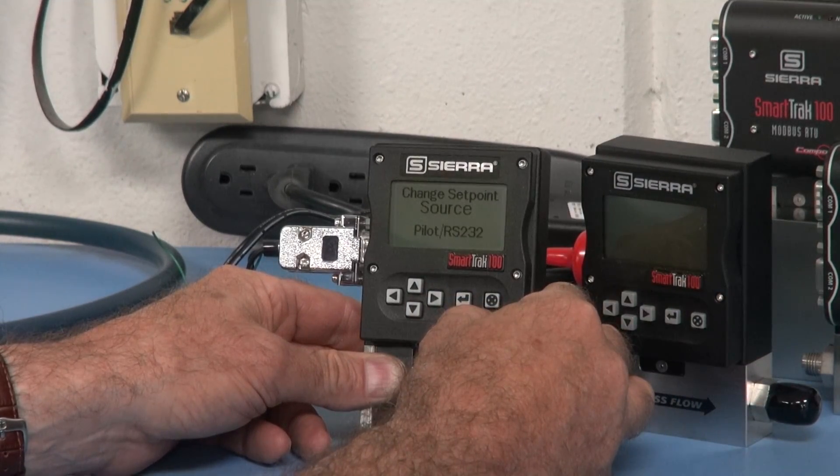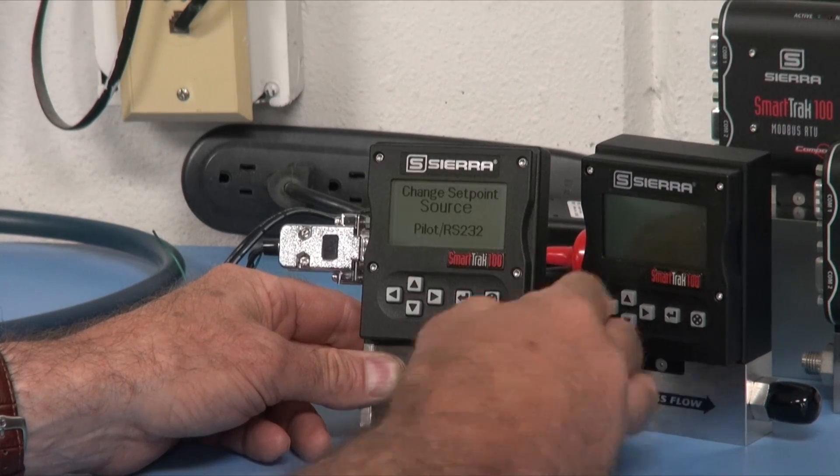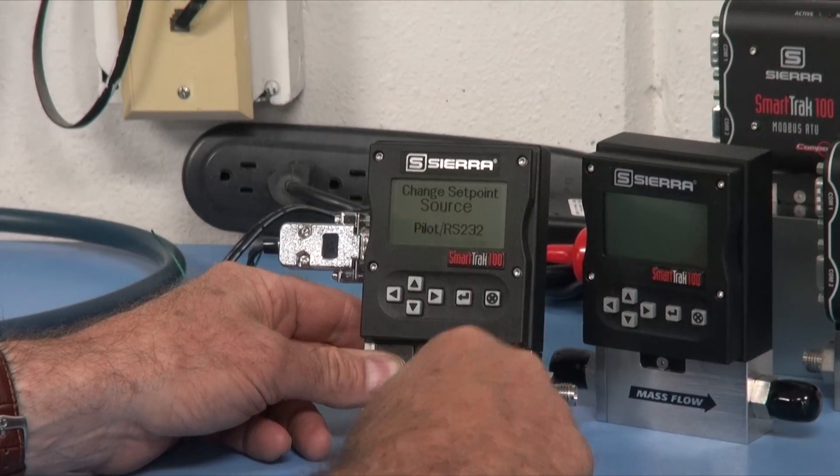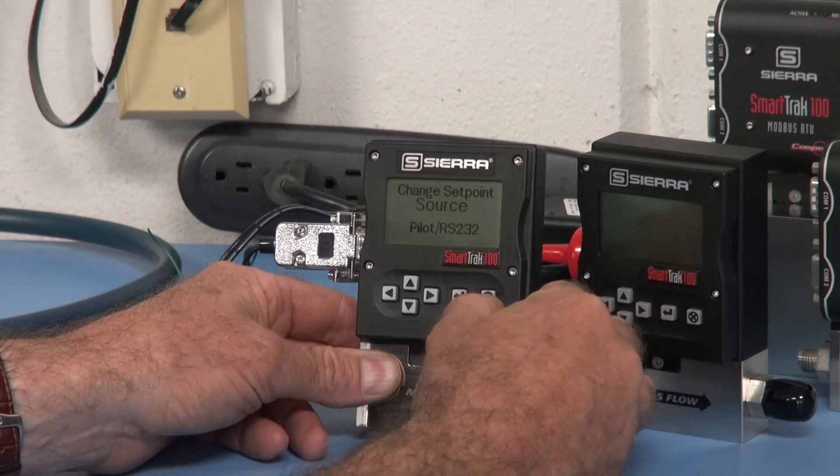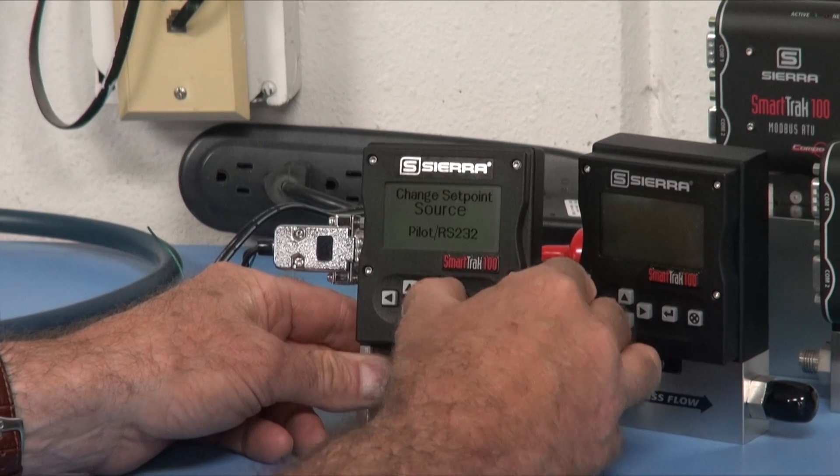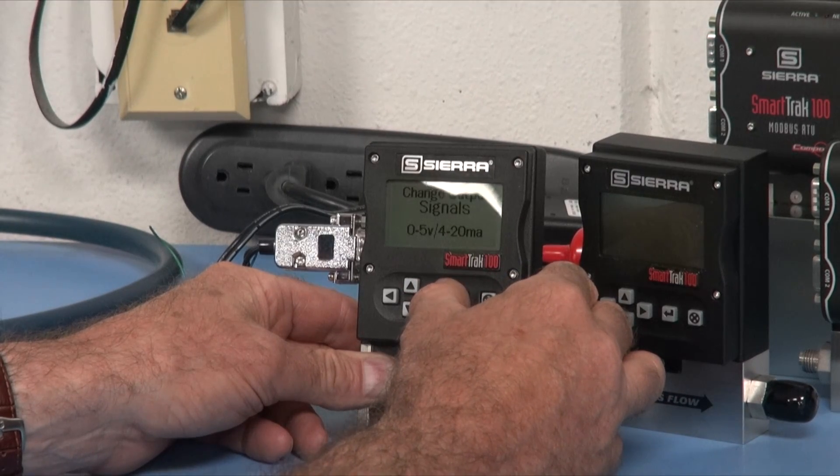You can also change the set point source. This would have to be set up for pilot RS-232, so your computer or the screen. You can also change to analog signals, and then we can change the output signals.